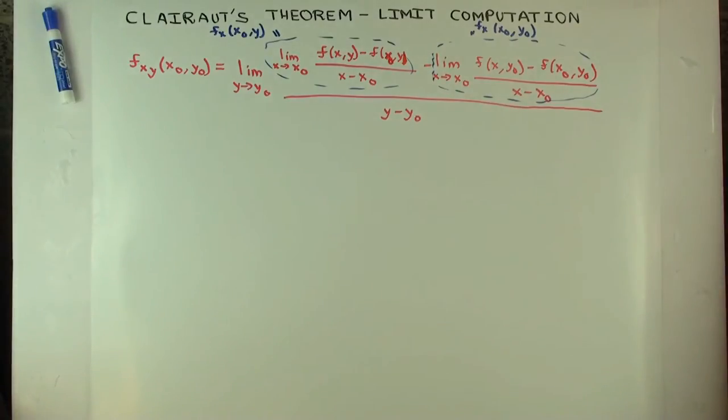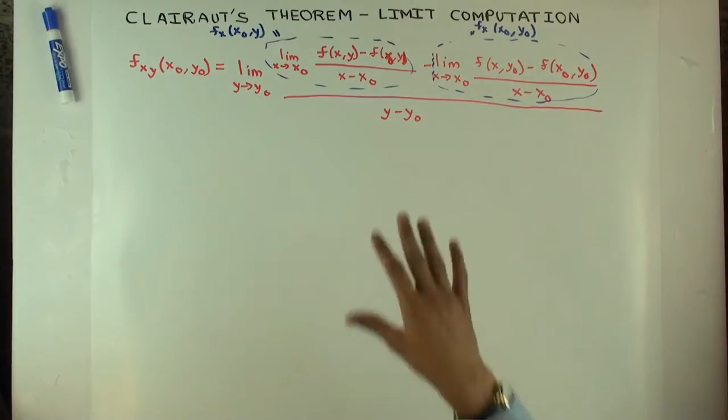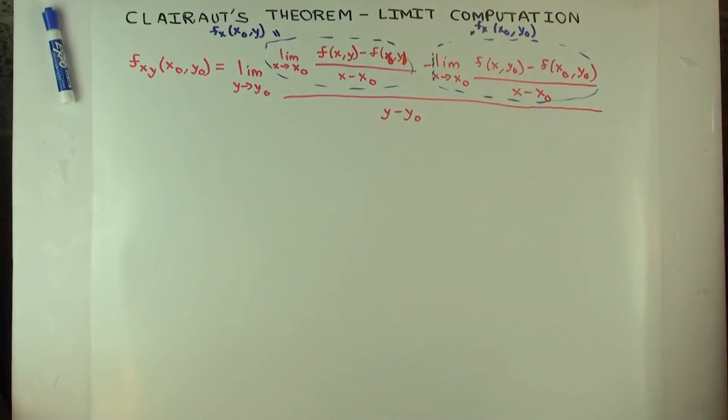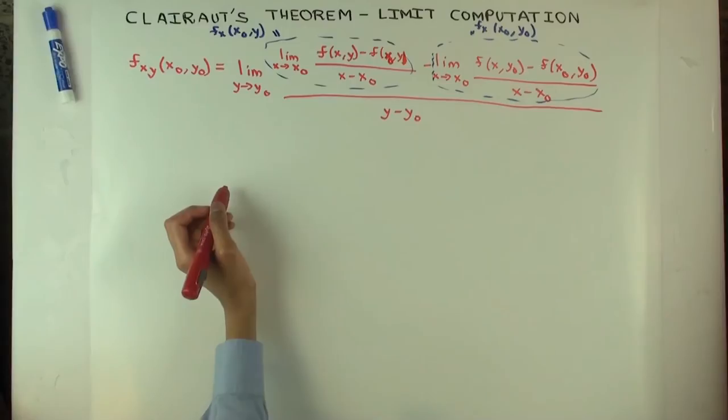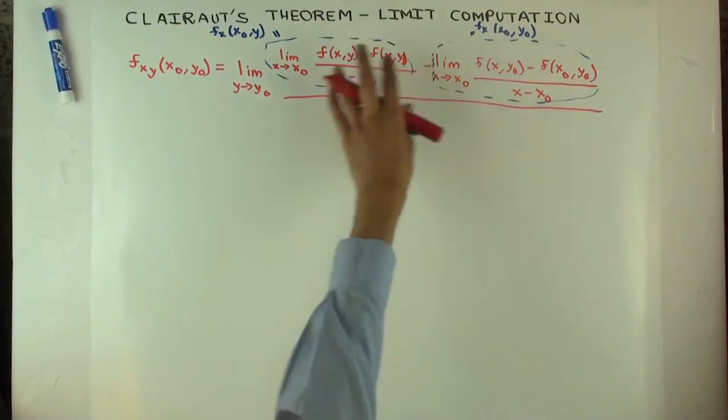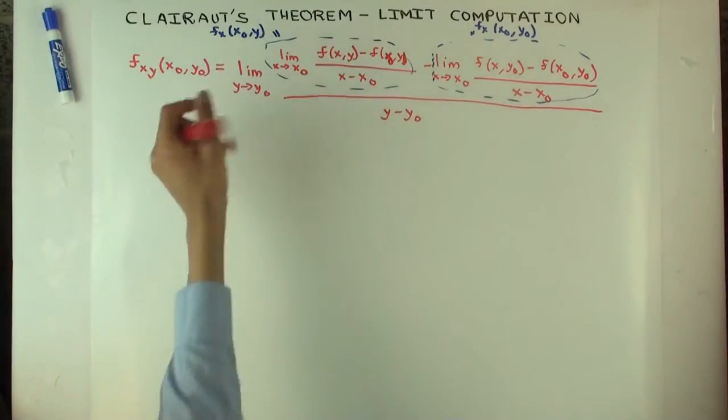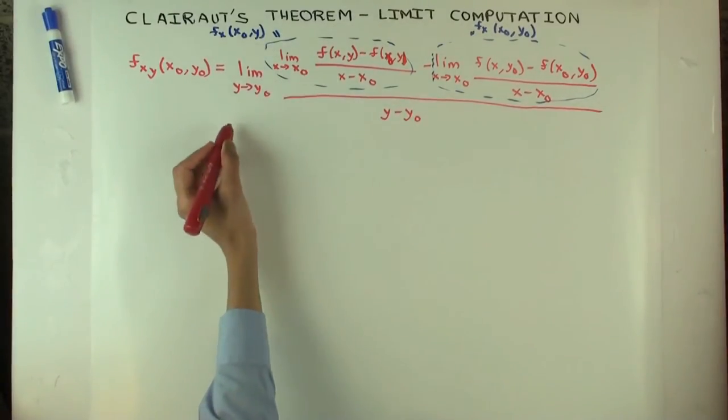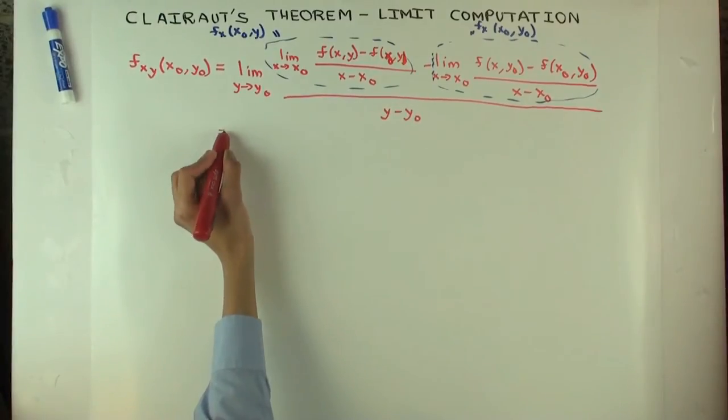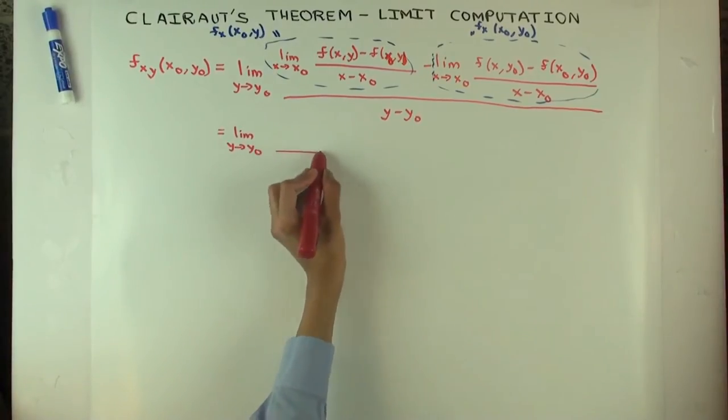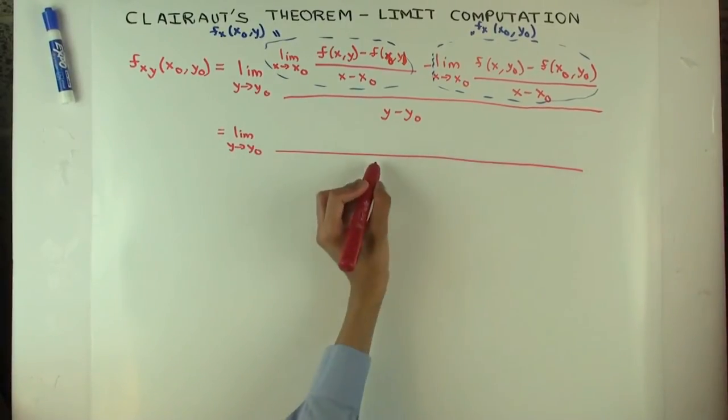So far so good? If you're confused about this, you can watch that video where I obtain this in detail. Now, I want to start simplifying this, conditional to the existence of this expression. So, this is the definitional limit. But now, if I know the limit exists, I can actually simplify it. What's the first step I can do to simplify it? The difference of the limit as the limit of the difference.